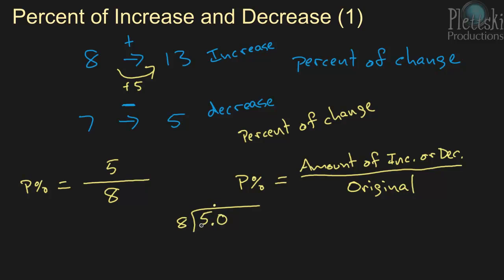8 doesn't go into 5, so we're going to have to add a decimal and a 0. 8 does go into 50 six times. Because 6 times 8 is 48. 50 minus 48 is 2. Bring down a 0. 8 goes into 20 two times.